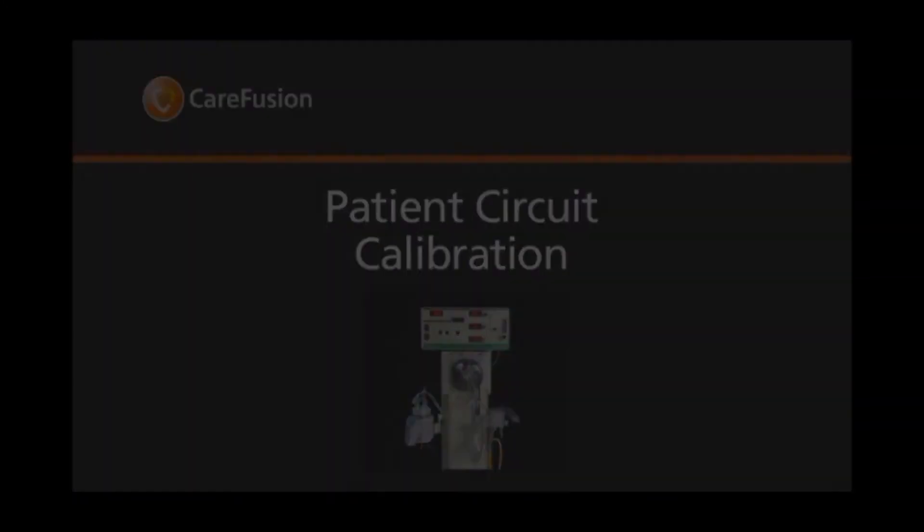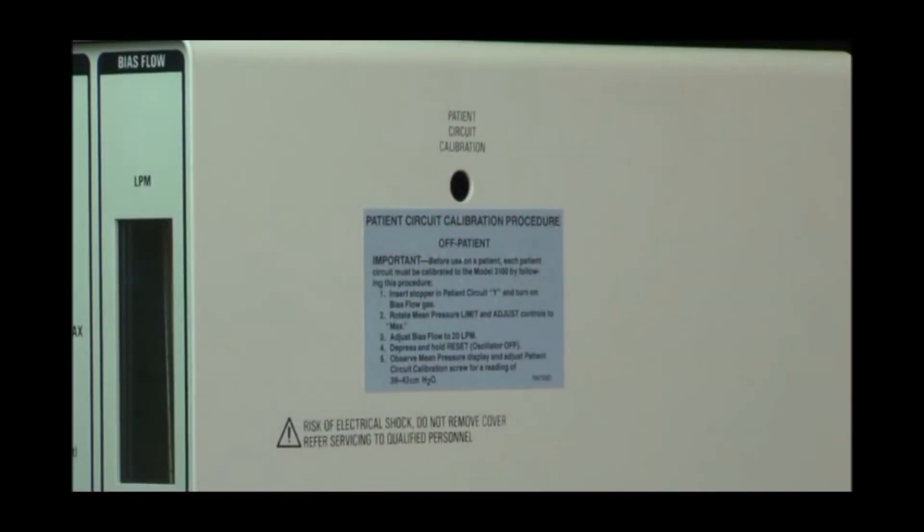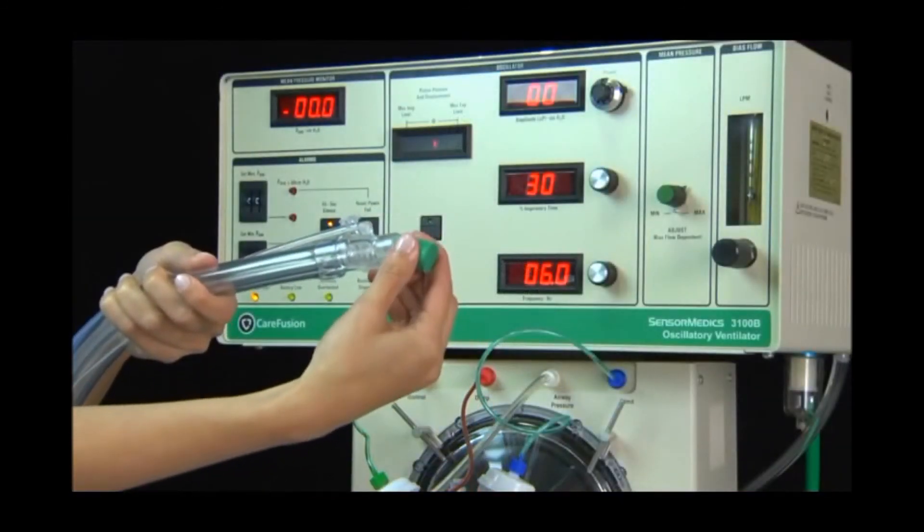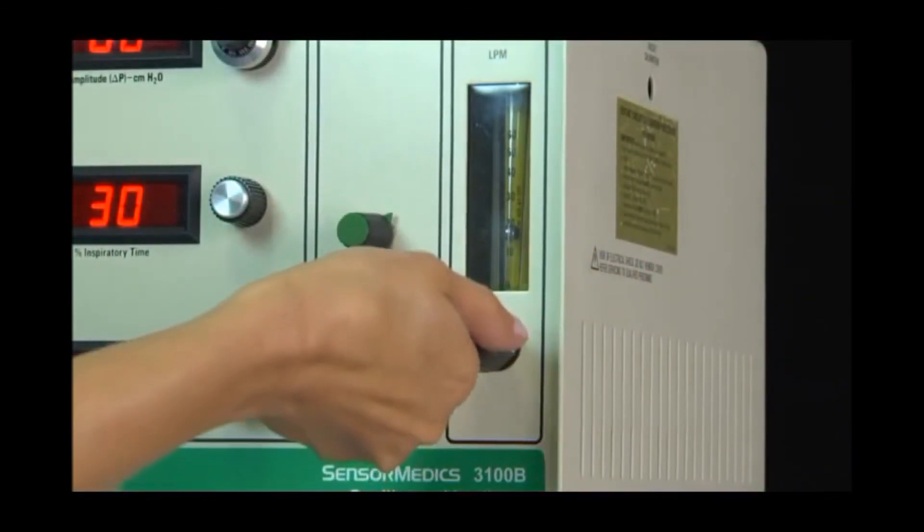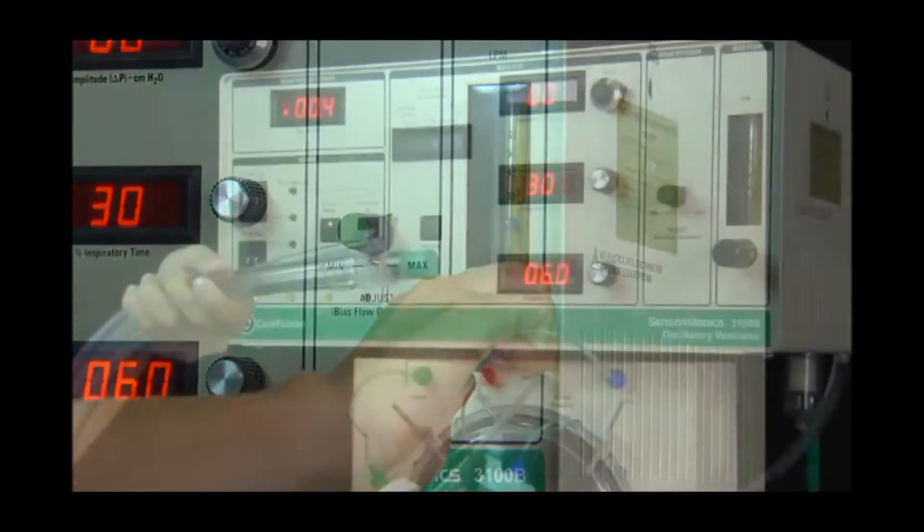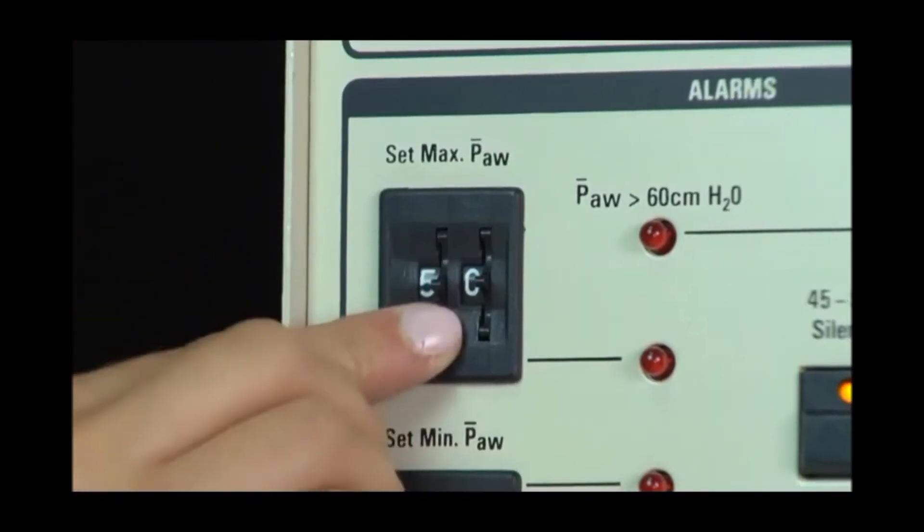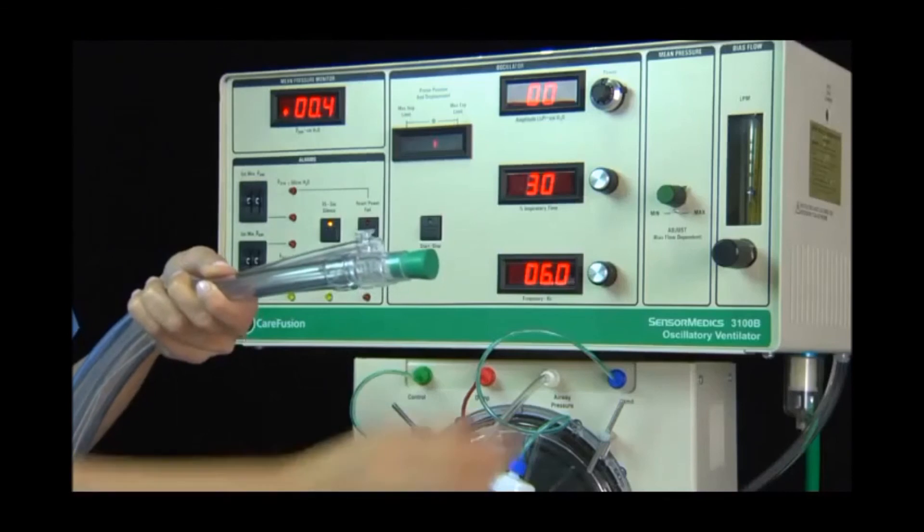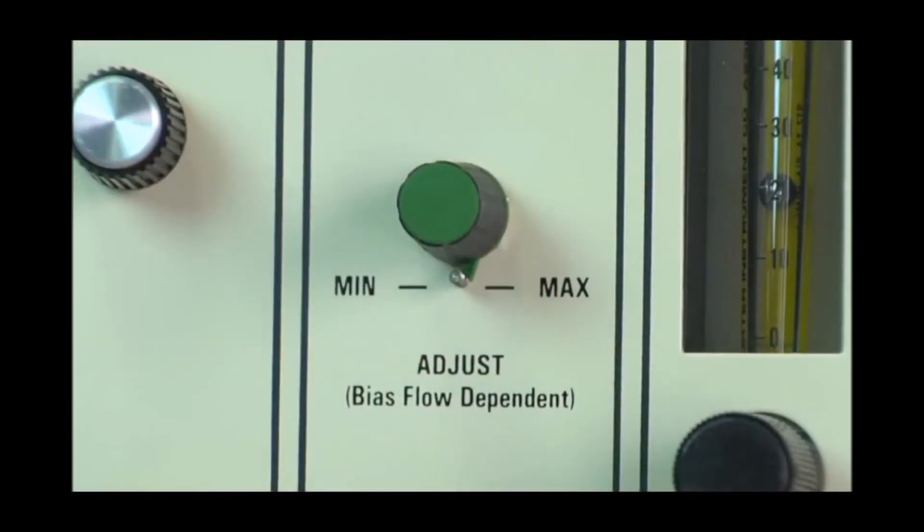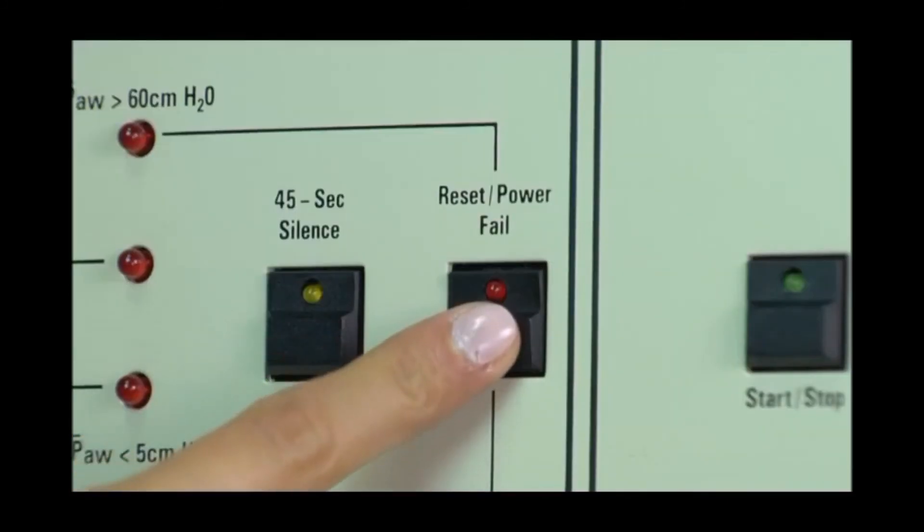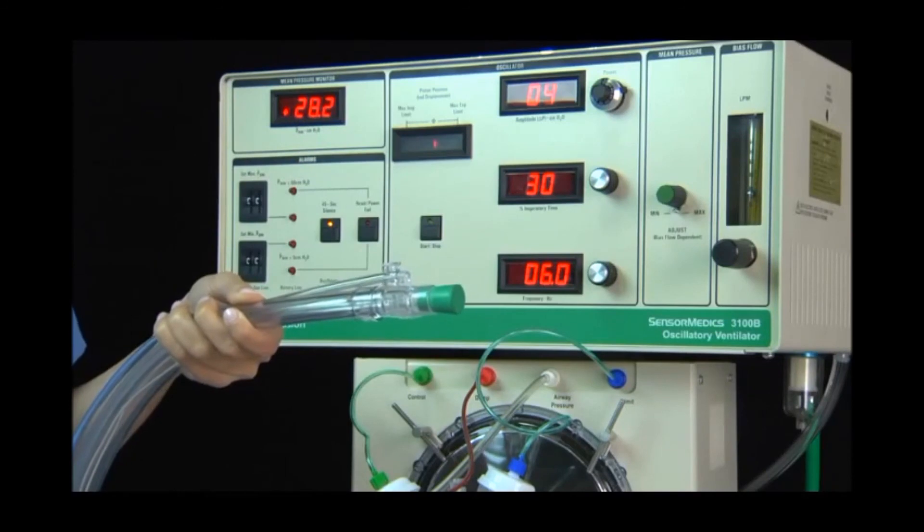To calibrate the patient circuit, locate the instruction label on the right side of the ventilator and follow these steps. Insert the stopper into the patient Y and adjust bias flow to 20 liters per minute. Set the maximum mean airway pressure alarm to the upper limit. Set the mean pressure adjust to the maximum setting by turning the control fully clockwise. Press and hold the reset power fail button until the mean airway pressure reaches 5 centimeters of water pressure.